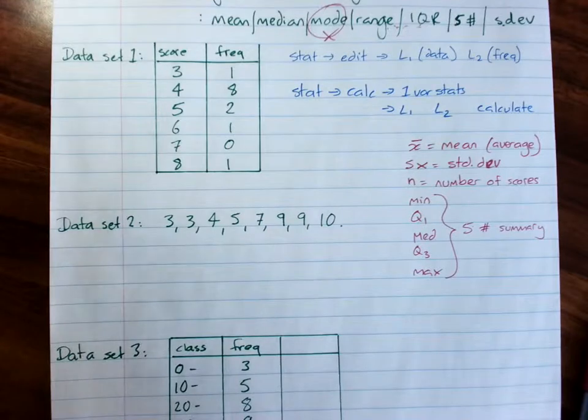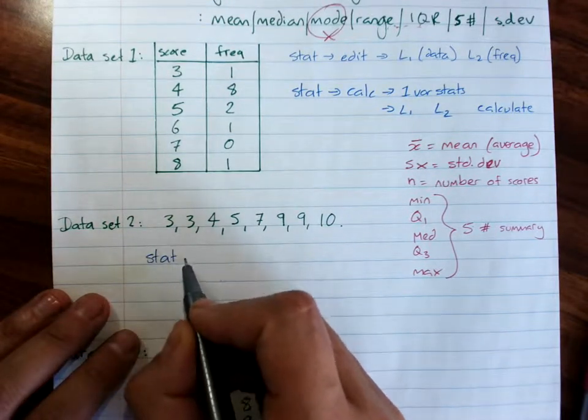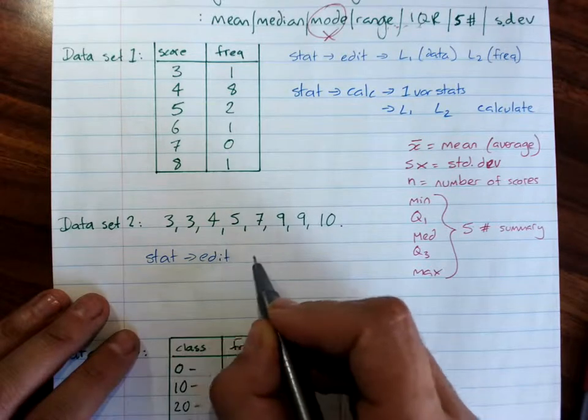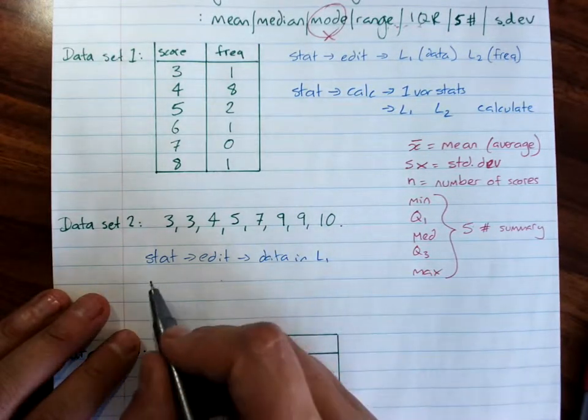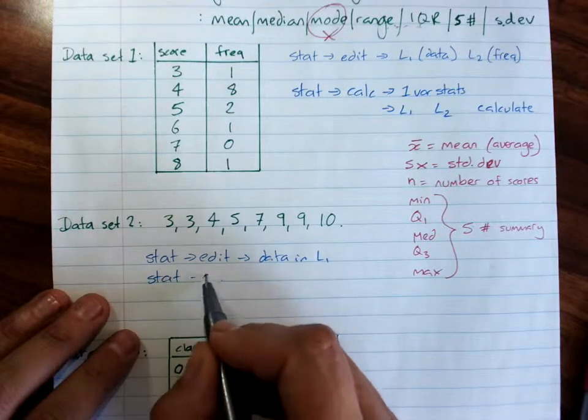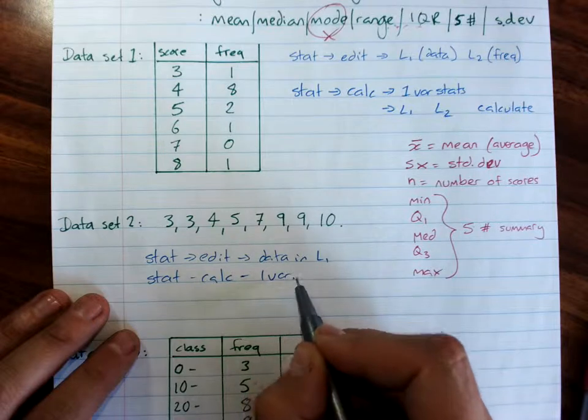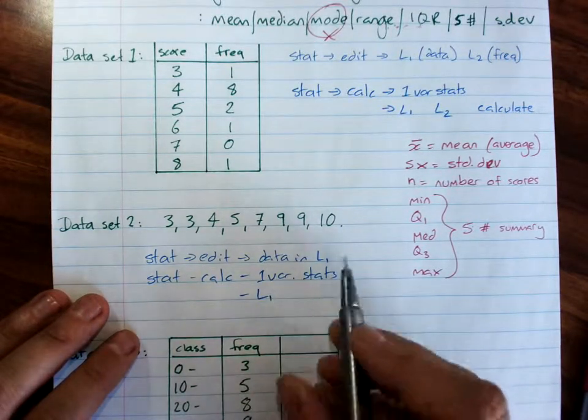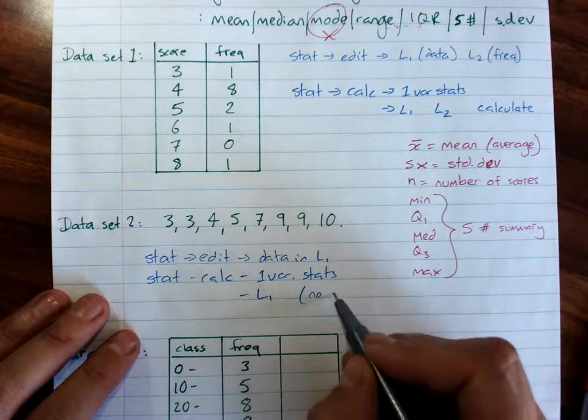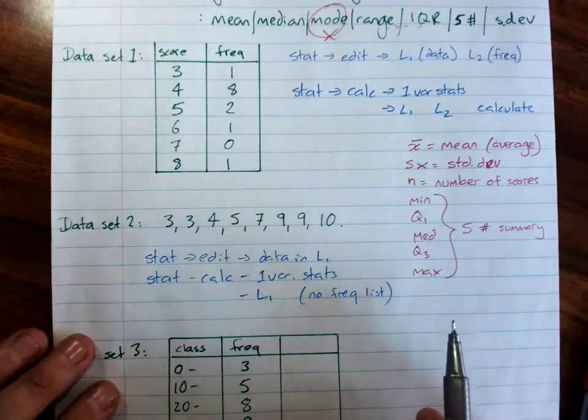So here, same to enter it. But when we do stat, calc, one variable stats, we just want L1, no frequency list, because we didn't have a frequency list.